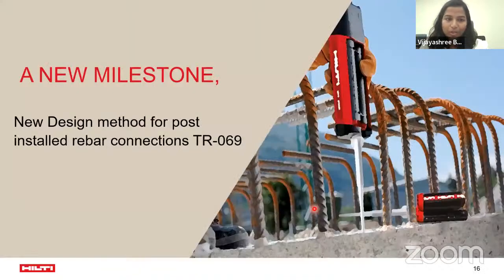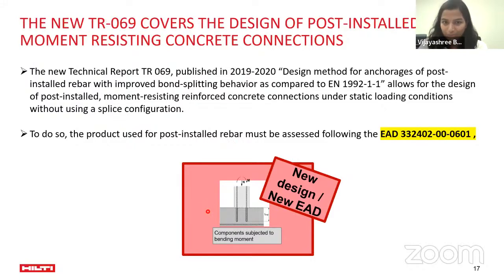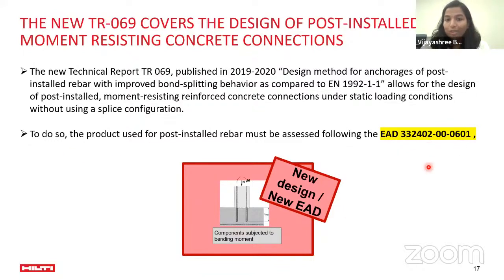This gap gives way to a new milestone: TR069. With the inclusion of TR069 with EC2, we are able to cover moment-resisting connections. Until as recently as 2019 we were still using the old methodology, but TR069 — introduced in 2019 and 2020 — provides a design method for post-installed rebar anchorage with improved bond-splitting behavior. One mandatory requirement to use TR069 is that the chemical product must be assessed using the relevant EAD.